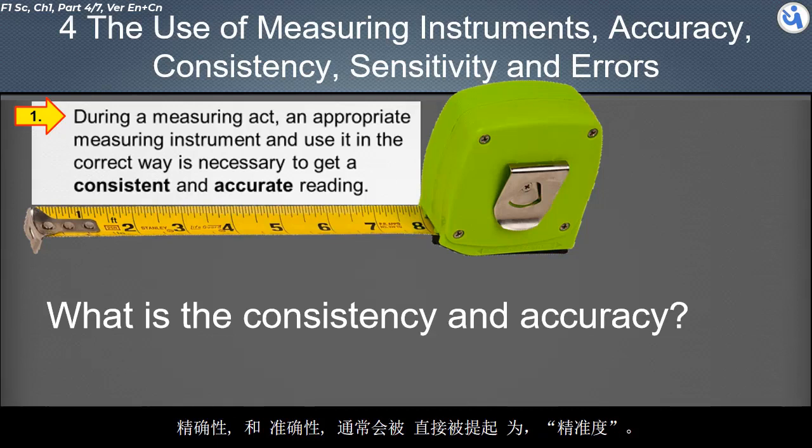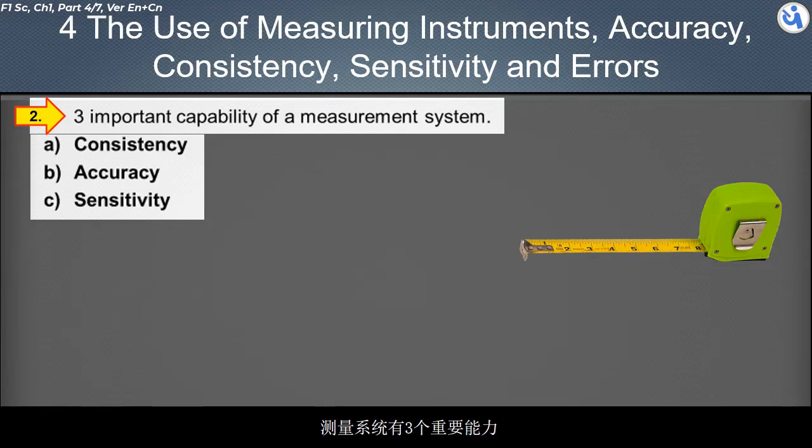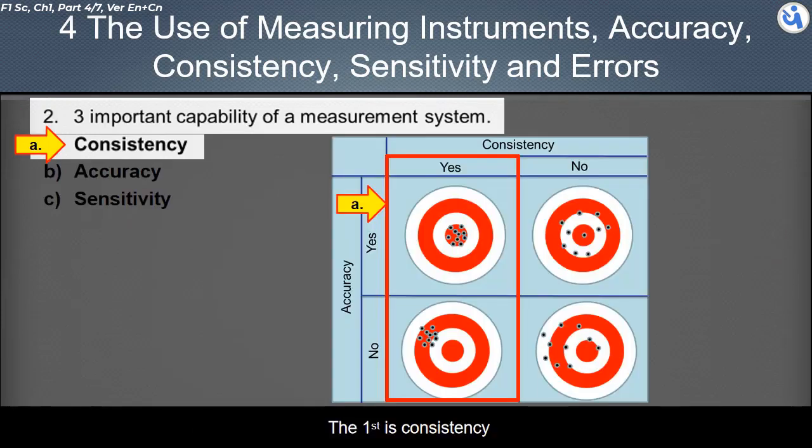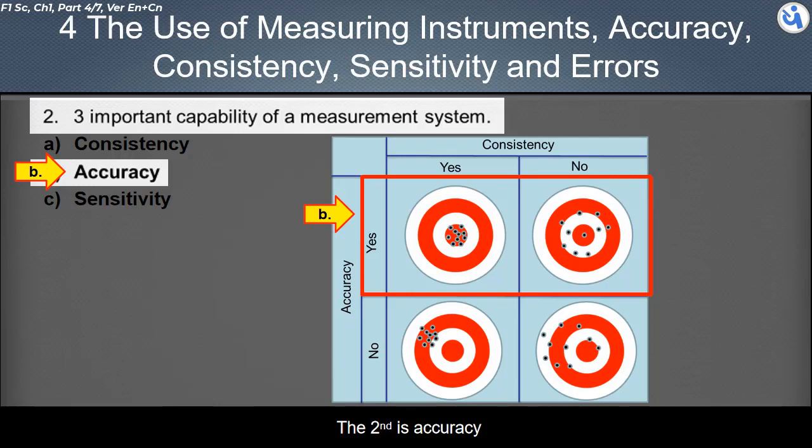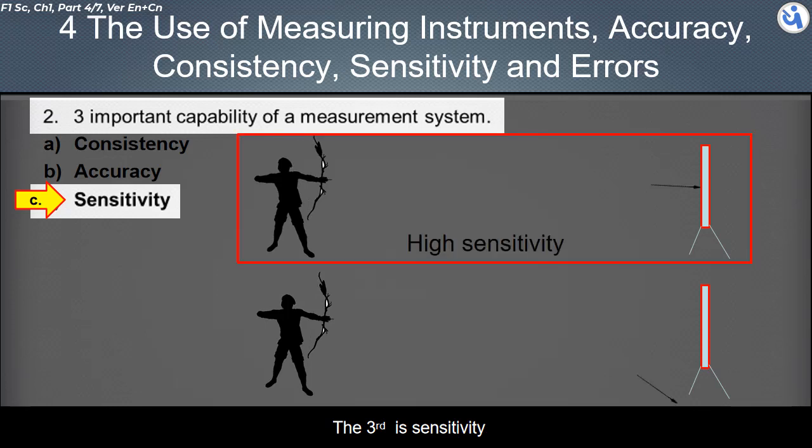There are three important capability of a measurement system. The first is consistency. The second is accuracy. The third is sensitivity.